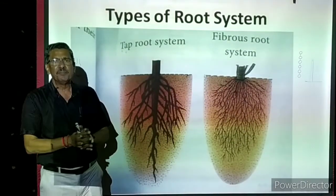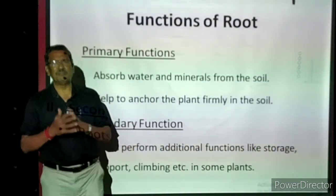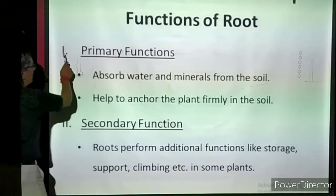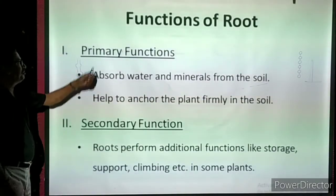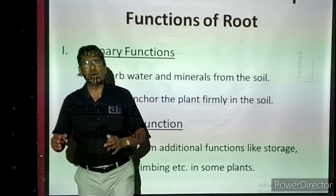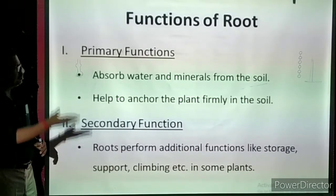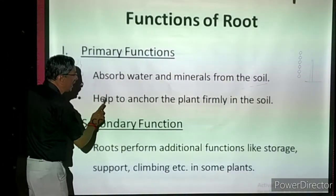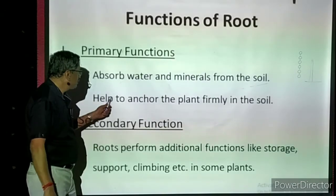Whether tap root system or fibrous root system, they perform some common functions. The primary function is that roots absorb water and minerals from the soil. A plant needs water and minerals every day; the root system absorbs them and supplies water and minerals to the stem, branches, leaves, flowers, and fruits everywhere — so the plant lives well.